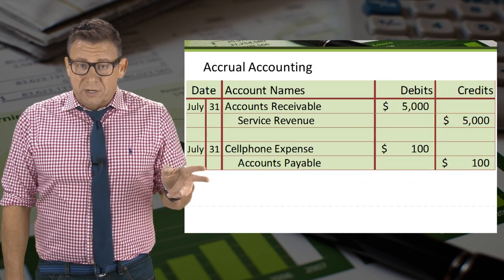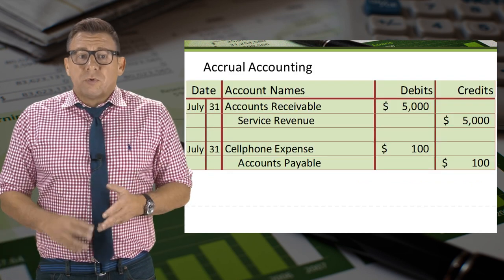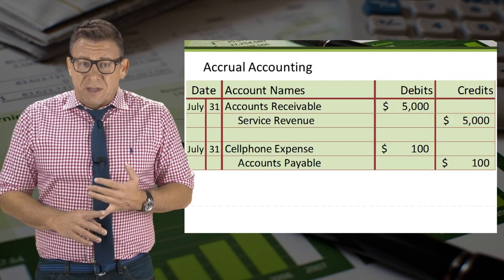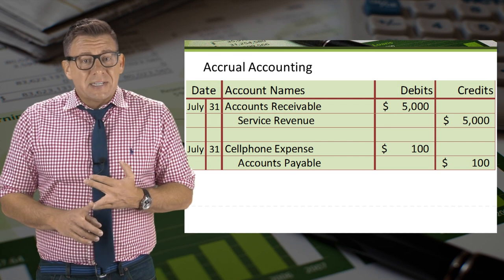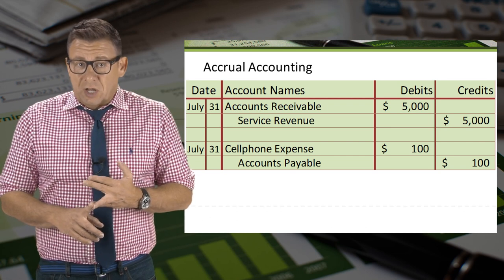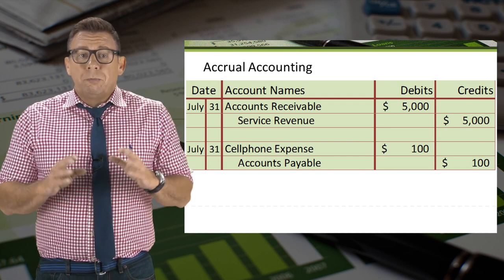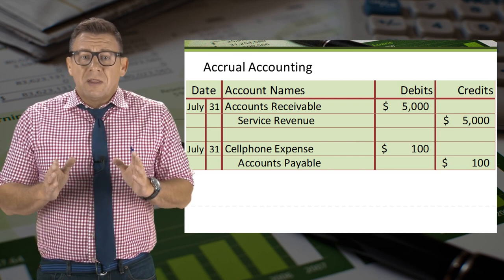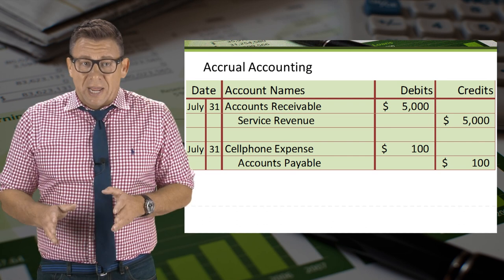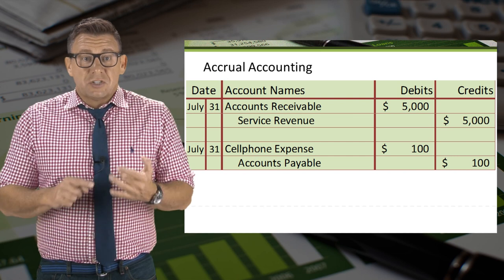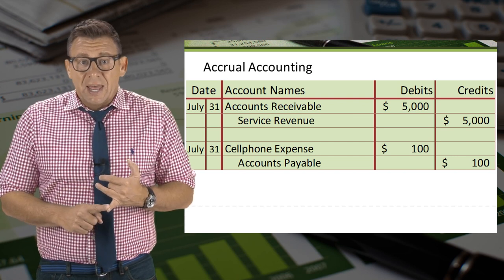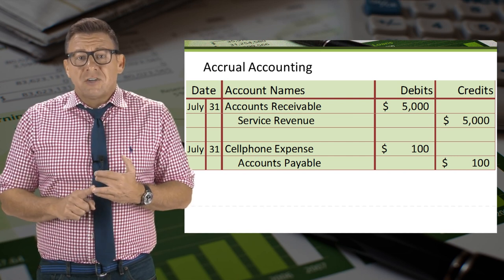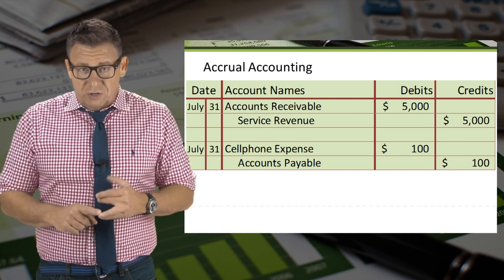Under accrual accounting, both the revenue of $5,000 and the expense of $100 would be recorded in the month of July, because the revenue was earned in July and the expense was incurred in July.